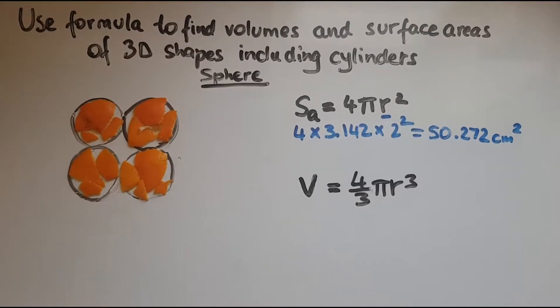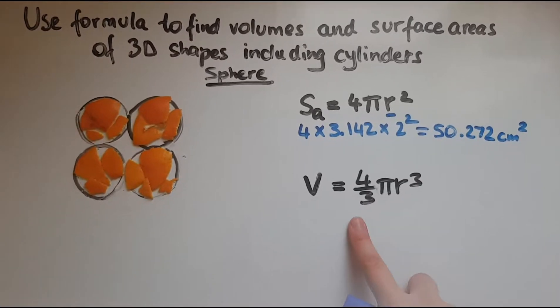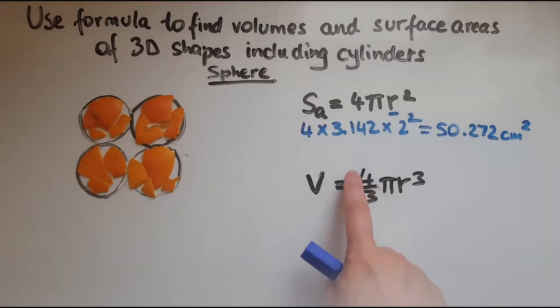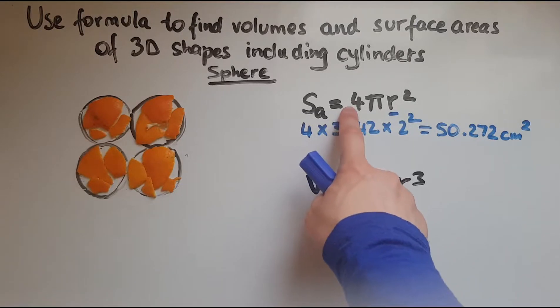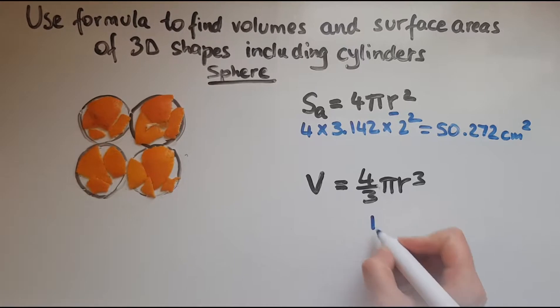Now looking at the volume of a sphere, the formula resembles two other formulas. We can see the 4 coming from surface area, so 4πr², and that is cubed. We can see a third there, which comes from the formula of